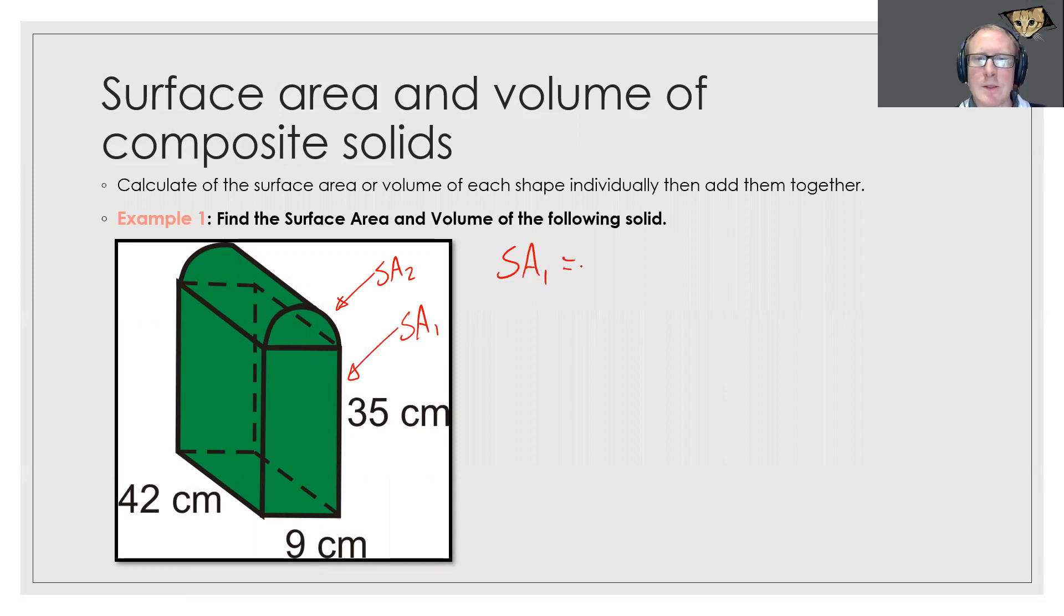That's just a rectangular prism but it doesn't have the top layer on top of it. If we start with the sides we have 42 times 35, which would be this side and this side, so we've got to times that by 2. Then we've got the front which would be 9 times 35, and the front is the same as the back, so we'll times that one by 2.